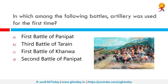In which among the following battles was artillery used for the first time? The answer is the First Battle of Panipat. The First Battle of Panipat was fought on April 21st, 1526, between the invading forces of Babur and the Lodi Kingdom. It marked the beginning of the Mughal Empire and the end of the Delhi Sultanate. This was one of the earliest battles involving gunpowder, firearms and field artillery in the Indian subcontinent, which were introduced by the Mughals.